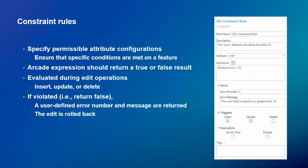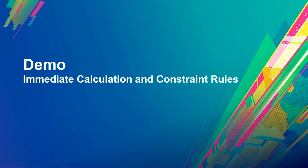The constraint rule specifies permissible attribute configurations — we want to make sure certain conditions are met on the feature. The Arcade expression must return a true/false value. It's evaluated at edit operations. If the rule is violated, our system raises an error with a user-defined error number and message, which is part of the rule definition, and then we roll back the edits. So that's how we block invalid edits.